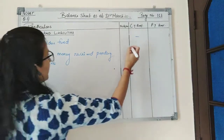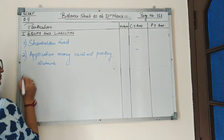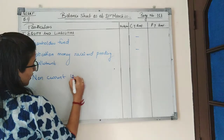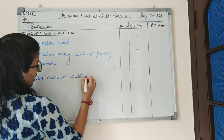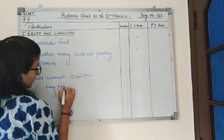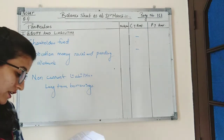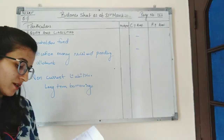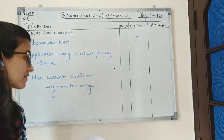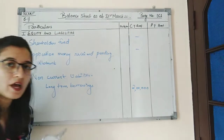There is no shareholders fund and no application money received pending allotment. Third heading is non-current liabilities, and under non-current liabilities there is a sub-part which is long-term borrowings. It is given in the question that 10% debentures amount to ₹2 lakh. We know debentures are long-term borrowings, so we will write this amount in the current year amount — long-term borrowings: ₹2,00,000.